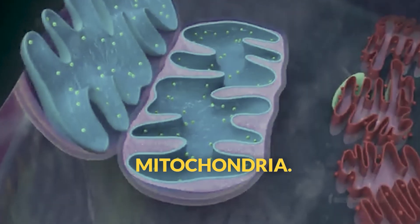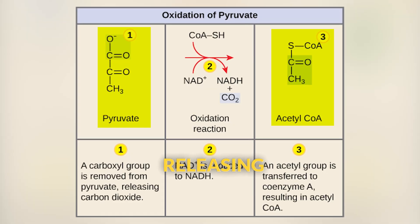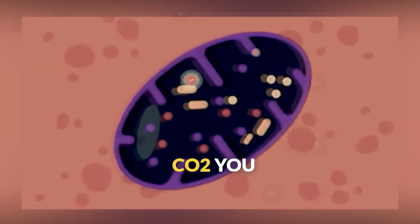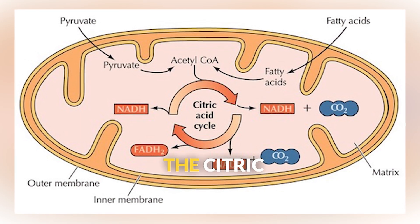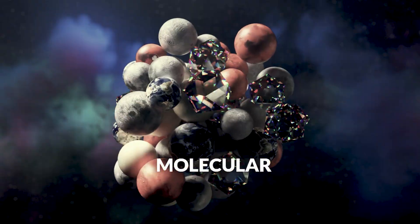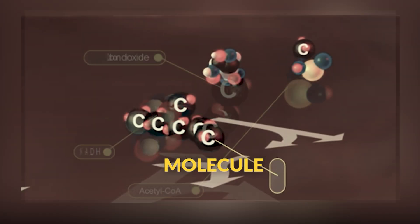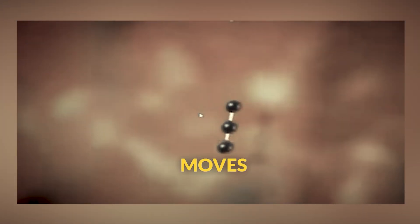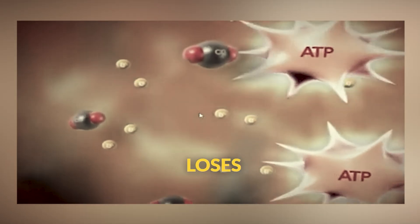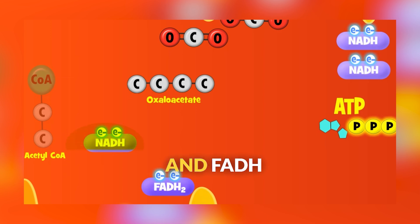Stage 2 happens inside the mitochondria. First, each pyruvate gets converted to acetyl-CoA, releasing carbon dioxide — part of the CO2 you breathe out actually comes from this step. The Krebs cycle, also called the citric acid cycle, is like a molecular recycling center. Acetyl-CoA joins with a 4-carbon molecule to form a 6-carbon molecule called citrate. As the 6-carbon molecule moves through the cycle, it gradually loses carbon atoms as CO2, while transferring energy to electron carriers like NADH and FADH2.